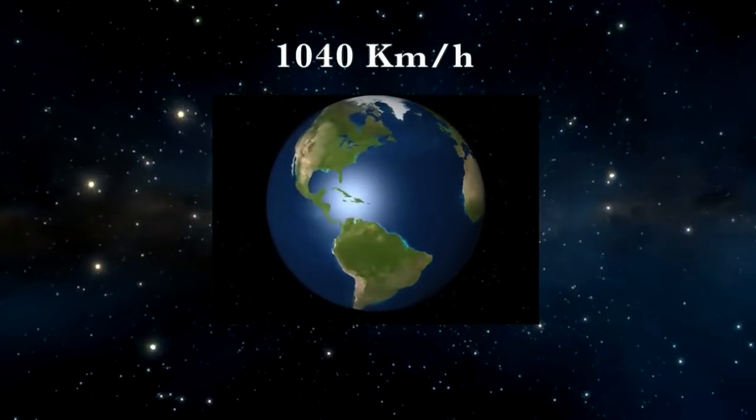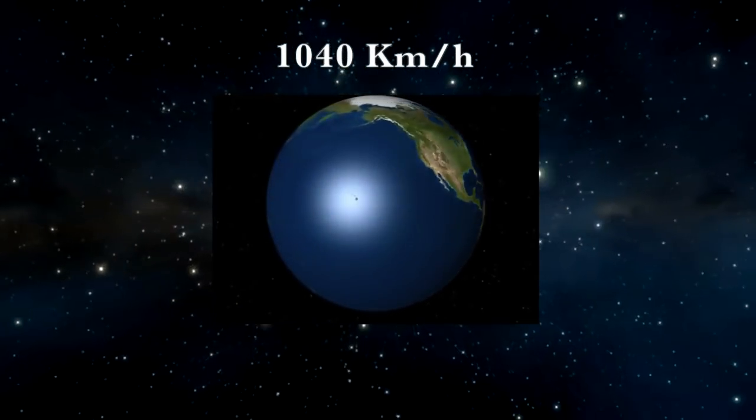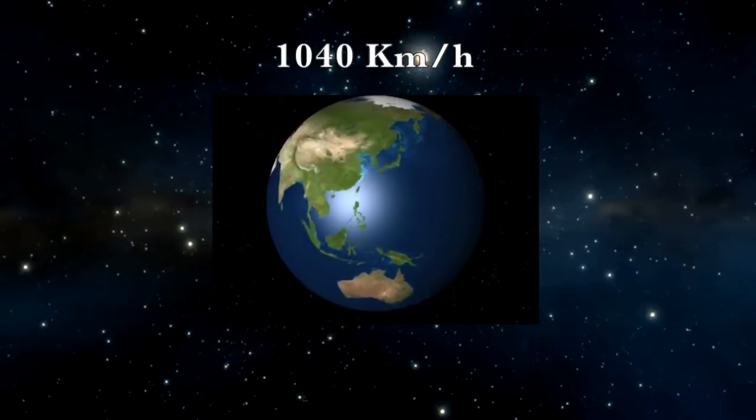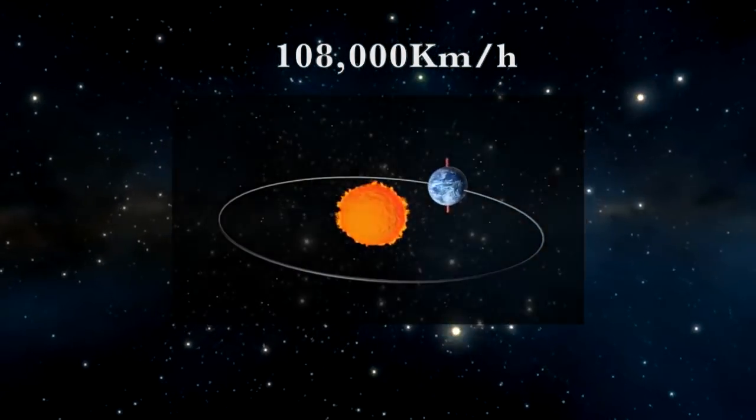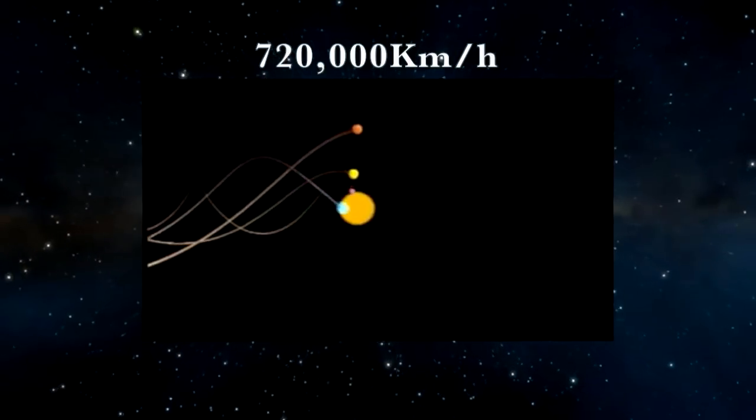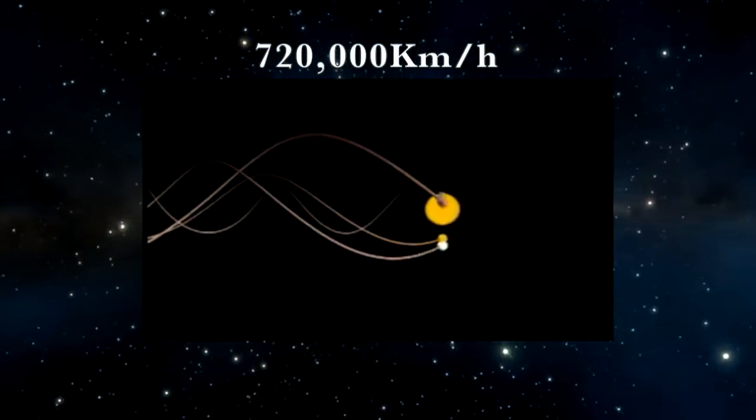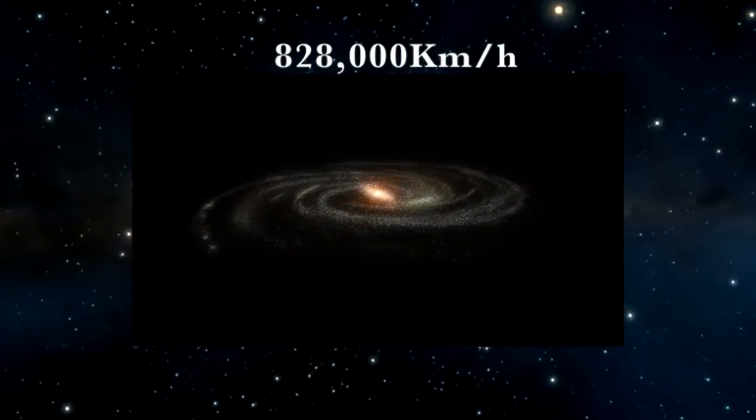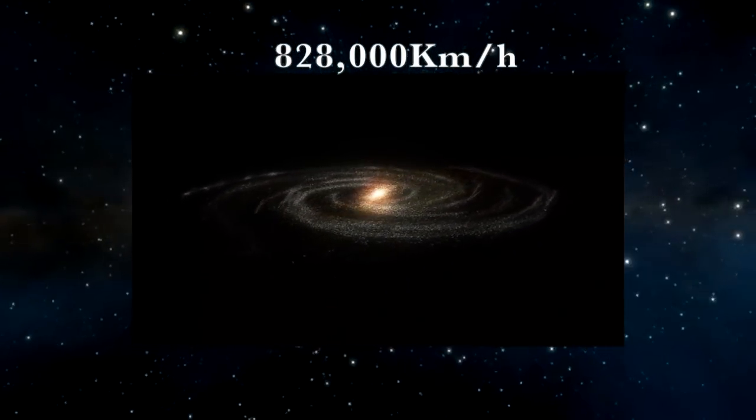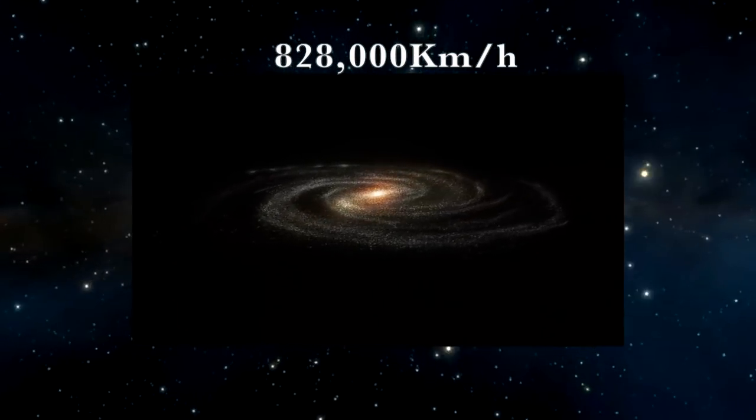We are spinning at 1,040 kilometers per hour. We're spinning around the sun at 108,000 kilometers per hour. The sun is spinning around the galaxy at 720,000 kilometers per hour. The galaxy is spinning around the black hole at 828,000 kilometers per hour.